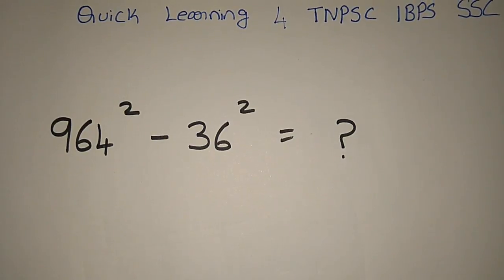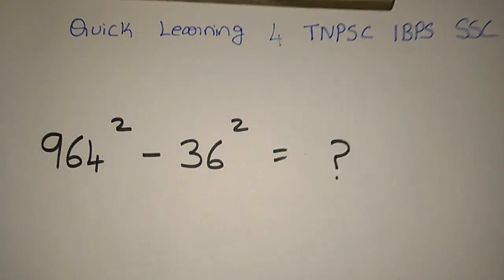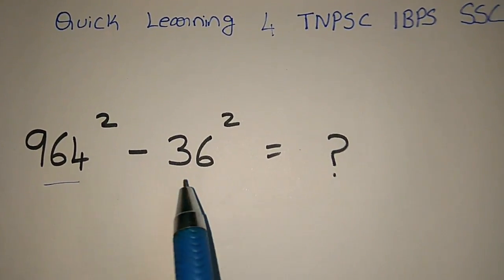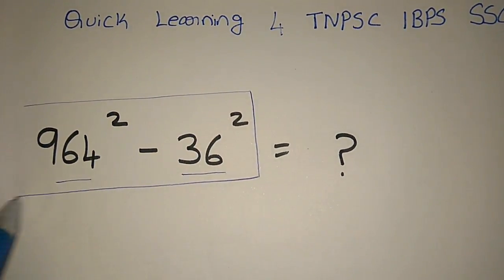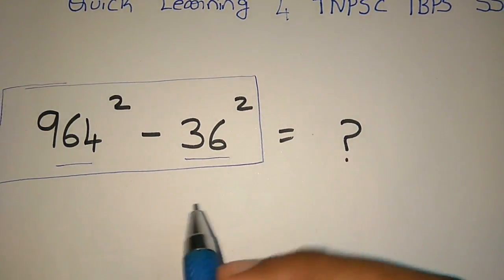First question is 964 square minus 36 square. This is a square number problem. If you want to solve a square number problem, the answer is very simple. Let's try a formula.